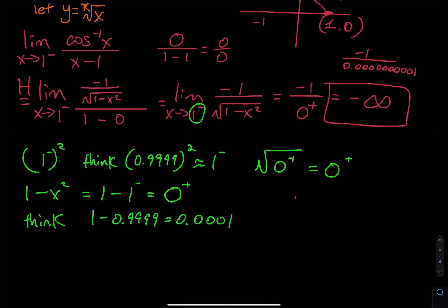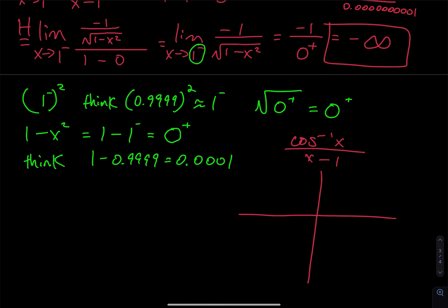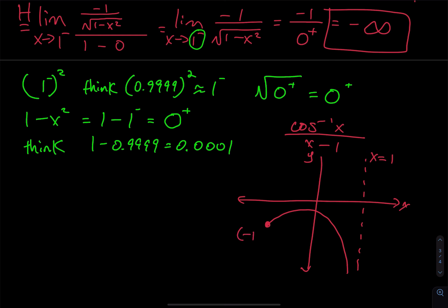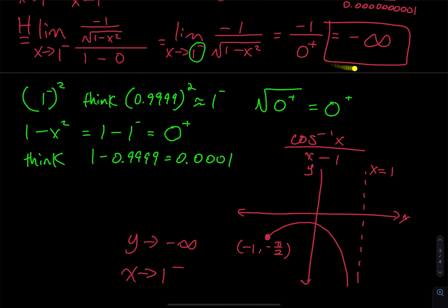Checking the graph of inverse cosine of x divided by x minus 1 confirms this: the graph has a vertical asymptote at x equals 1, starting at the point negative 1 comma negative pi over 2, going up slightly, then dropping straight down. As x approaches 1 from the left, the graph goes to negative infinity, confirming our answer.